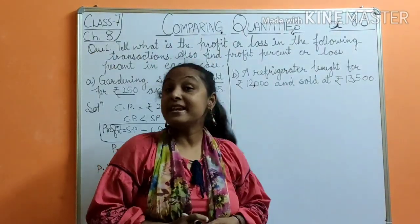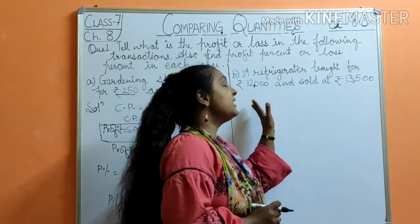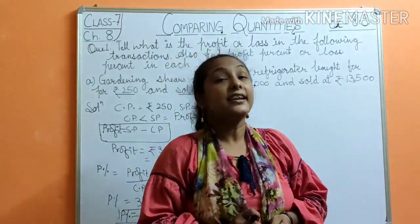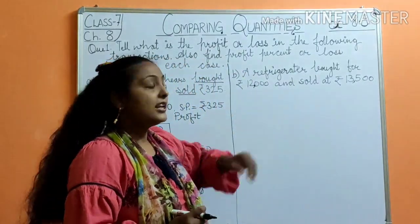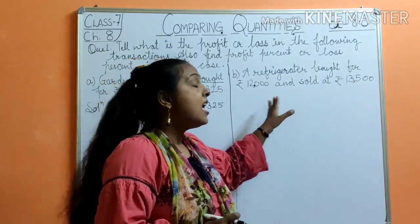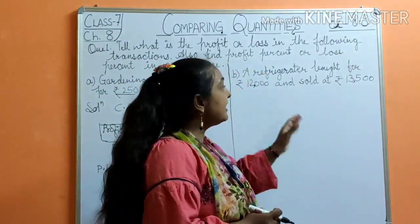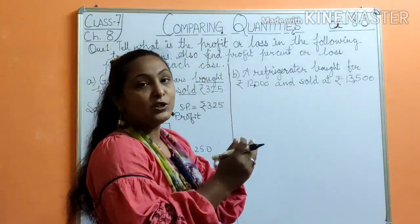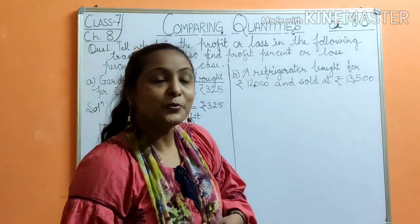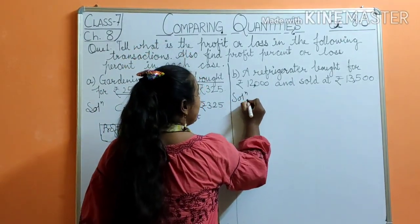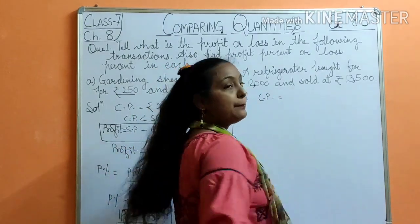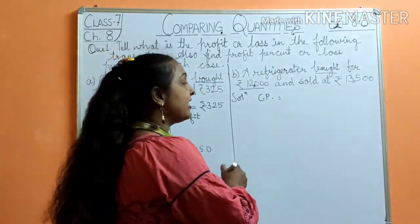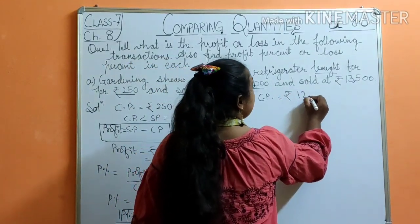Let's come to Part B. Part B is: a refrigerator bought for Rs. 12,000 and sold at Rs. 13,500. Now we have to find CP and SP. My CP is the bought price, which is Rs. 12,000 — I bought my refrigerator for Rs. 12,000. So I'll write CP = Rs. 12,000.